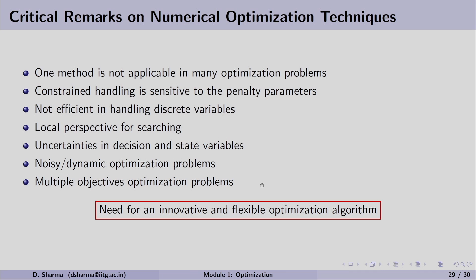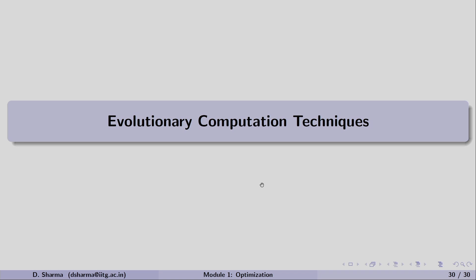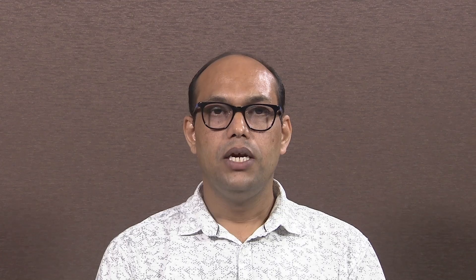By looking at all these remarks, we understand we need an innovative and flexible optimization algorithm to cater to all these needs. The answer is evolutionary computation techniques, which can be used for a wide variety of problems. They are direct search methods that do not need any gradient information. Whether it is a discrete problem, multi-objective problem, or there is uncertainty, the different complexities in the problem can be handled well with evolutionary computation techniques. With this introduction, we can see in later sessions and modules that evolutionary computation techniques are efficient for such complex and large problems. I conclude Session 1 of Module 1. Thank you.